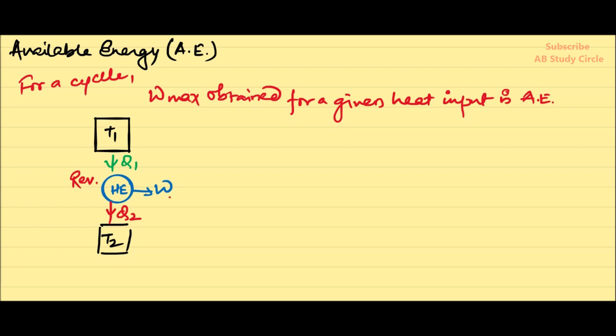Now, this W is your available energy, which is the available part of this heat supplied. And this Q2 is the minimum heat rejected to the sink. It is your unavailable energy, the unavailable part of your heat supplied Q1.